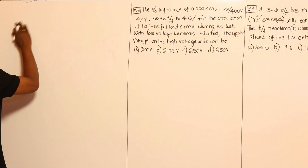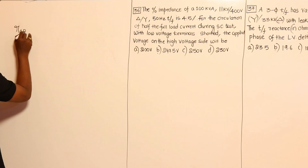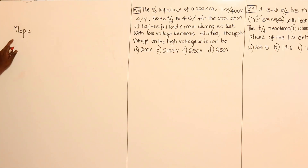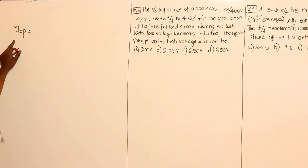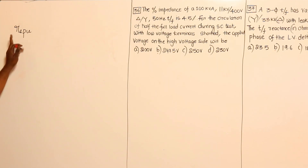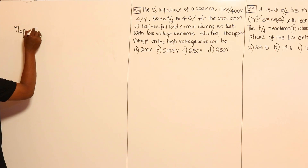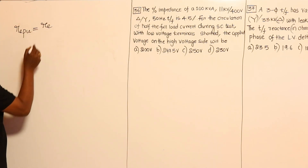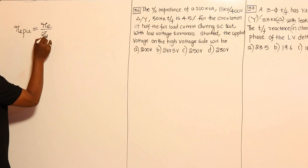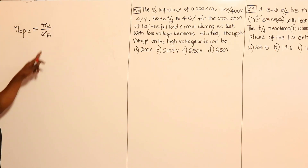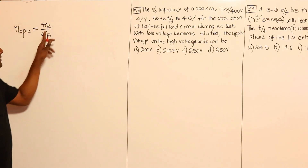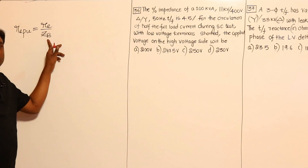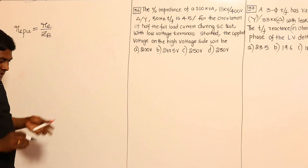Re per unit — either Re1 per unit or Re2 per unit will be the same, because ZL in per unit equals ZL dash in per unit. Re per unit is nothing but Re divided by Z_base. R_base will not be there because both values are in ohms, so Z_base only will be there.